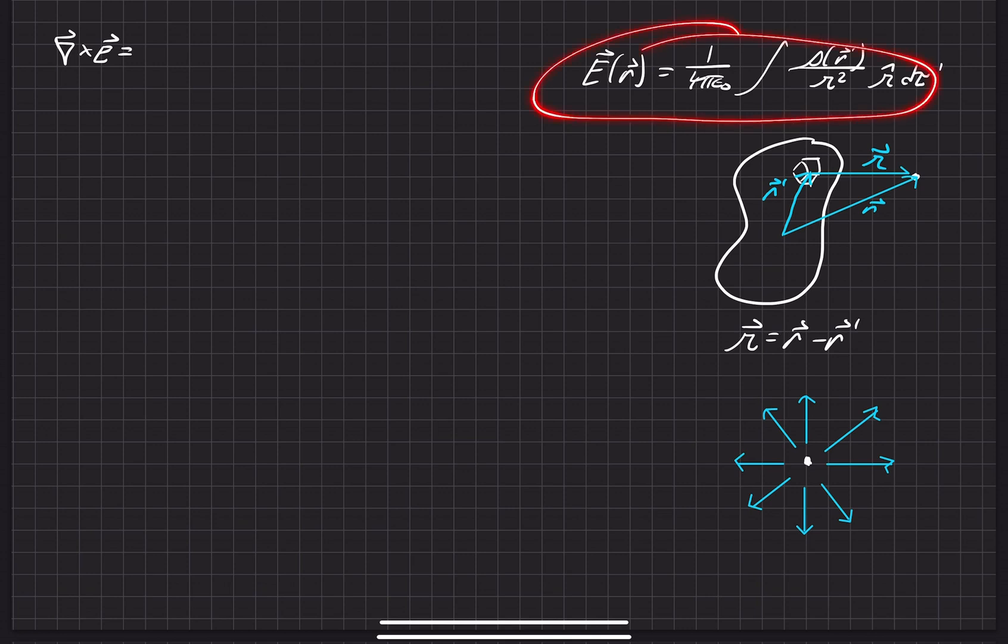And so what we have here is the general version of finding the electric field due to some sort of charge density at some arbitrary point. So what we can go ahead and do is just start finding the curl of this big chunk right here.